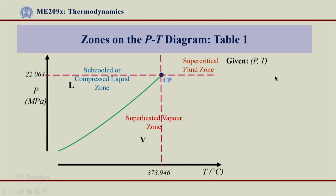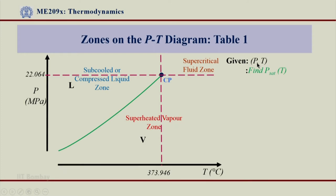If we take temperature as a reference — because we are using Table 1 right now — I will take temperature as a reference, and corresponding to this temperature I will be able to find out Psat(T). So the first step is to find Psat(T) for the given temperature. Once we know Psat(T), the next operation is to compare the given pressure P with Psat(T), and with this comparison one can find out in which zone the state lies.